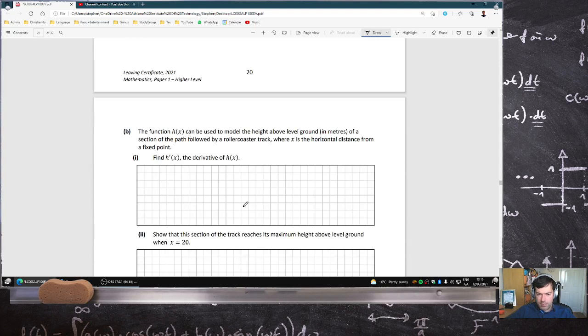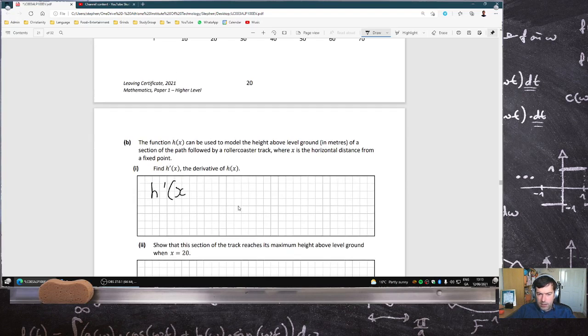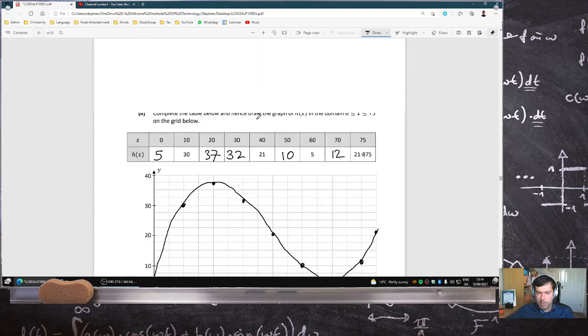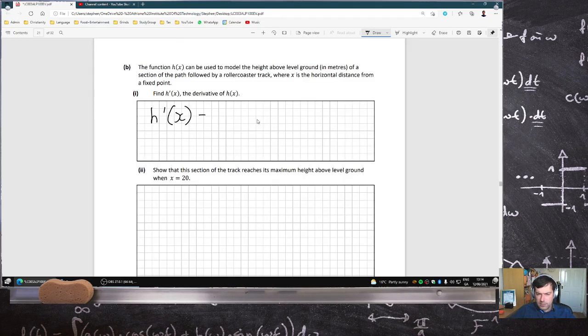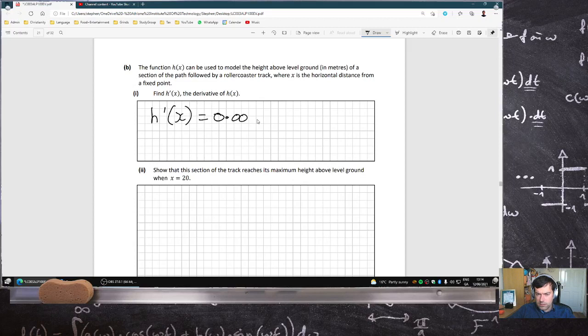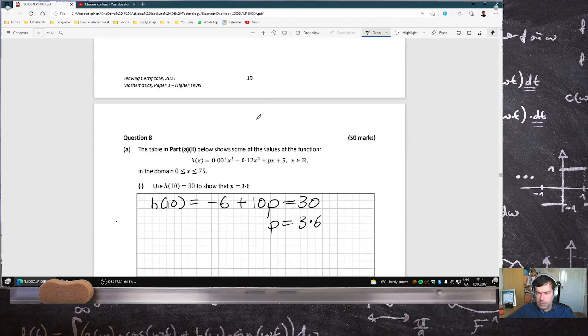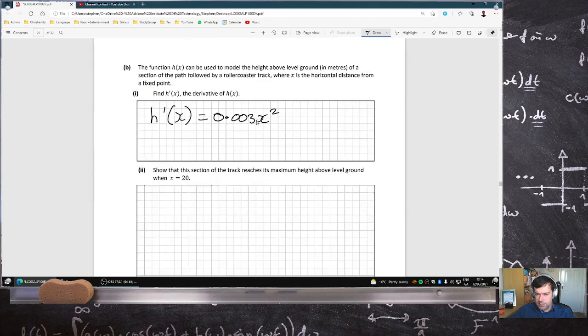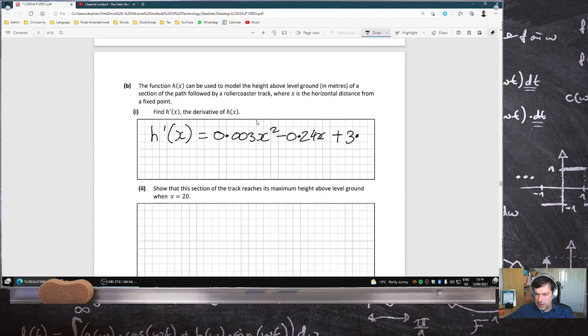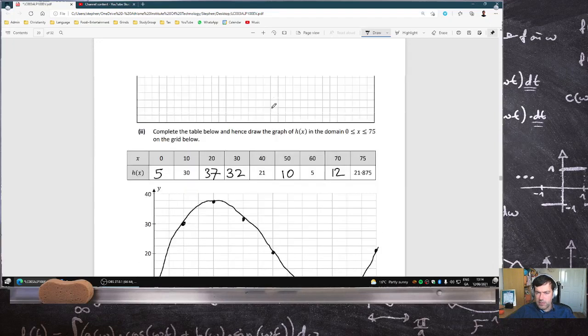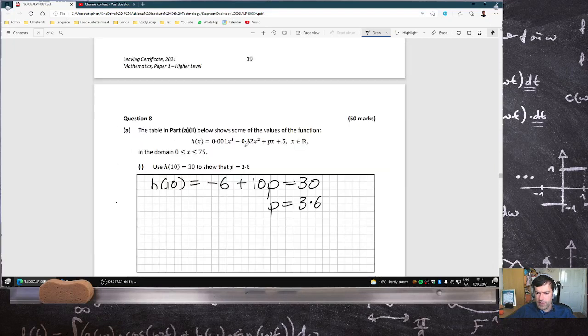Okay, it's a roller coaster. Find the derivative. Let's scroll back. h prime of x equals 0.003x squared minus 0.24x plus p. And I think p was 3.6, wasn't it?